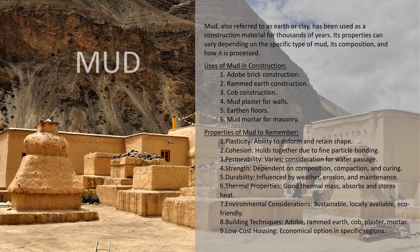Now let's discuss about the properties of mud. First is plasticity — the ability to deform and retain shape. Then cohesion — it holds together due to fine particle bonding. Then permeability — varies and is a consideration for water passage. Then strength — dependent on composition, compaction and curing. Durability is influenced by weather, erosion and maintenance. Thermal properties — it is a good thermal mass, absorbs and stores heat. Environmental consideration — it is very sustainable, locally available and eco-friendly. It is also used in low-cost housing as an economical option in specific regions.